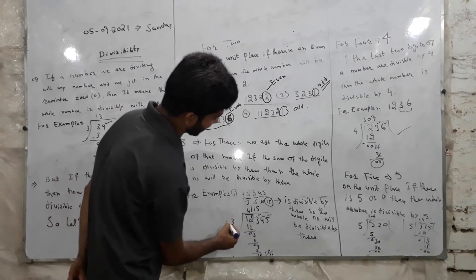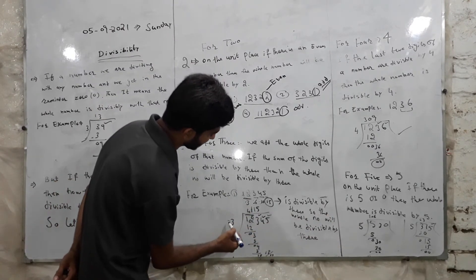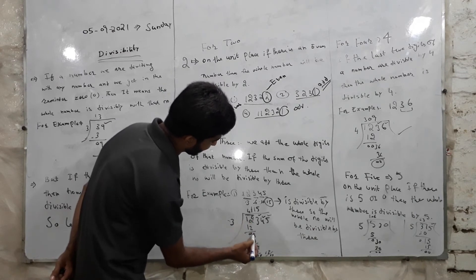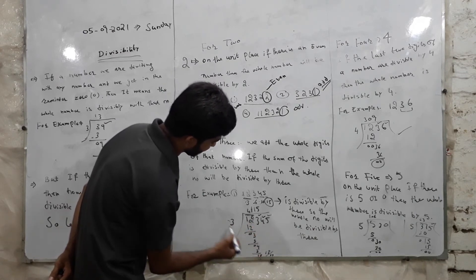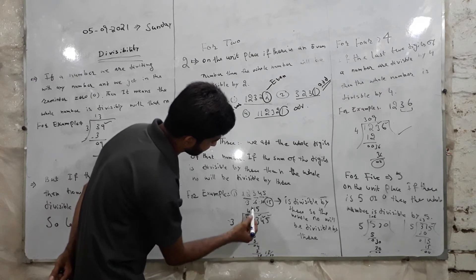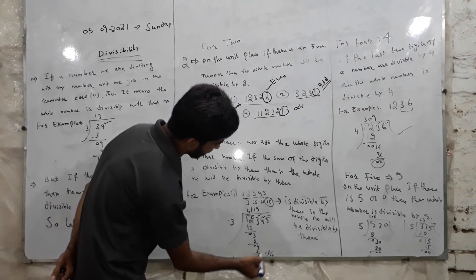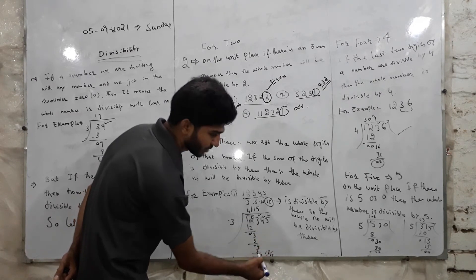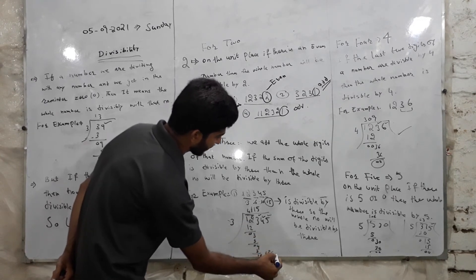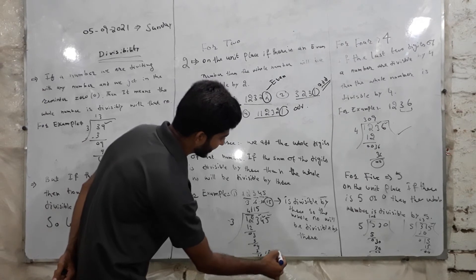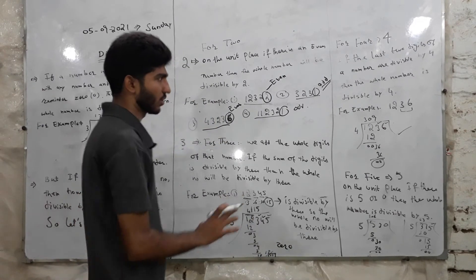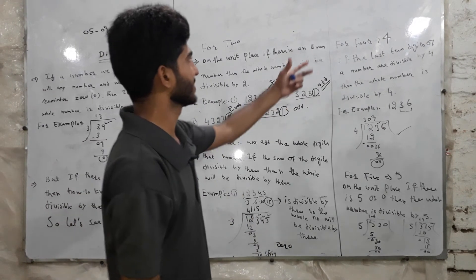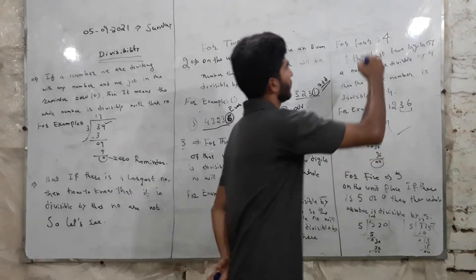Checking 12345: 1 + 2 + 3 + 4 + 5 = 15. We divide 15 by 3 and get remainder 0, so 12345 is divisible by 3.